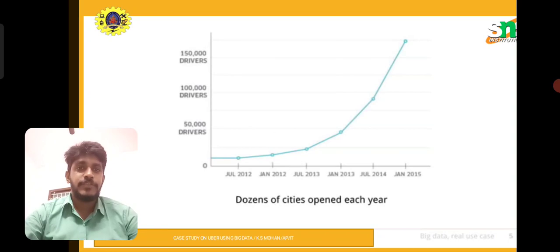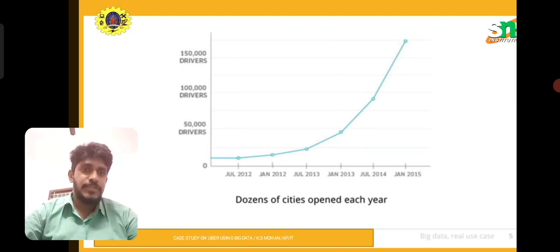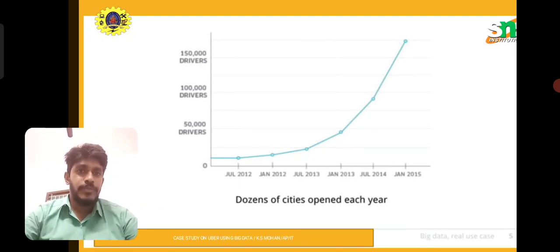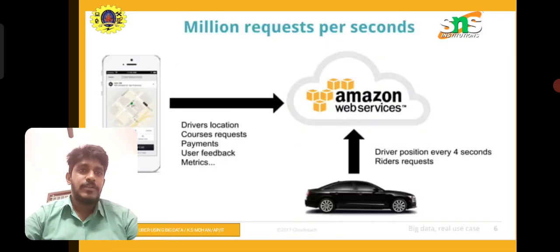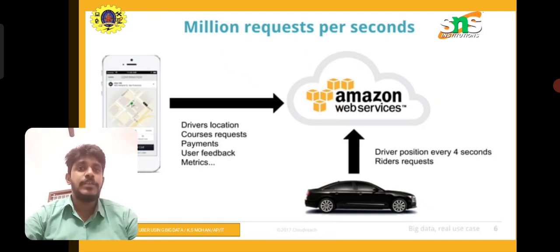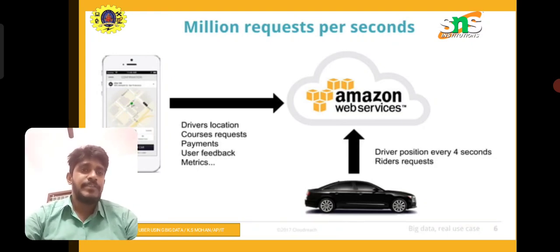In this slide we can see an X and Y axis graph from July 2012 to 2015 — the last three years of data. Uber drivers increased from 50,000 to 150,000 over those three years. In this graph, you can see millions of requests per second — there are more than a million requests per second being made by customers all over the world.